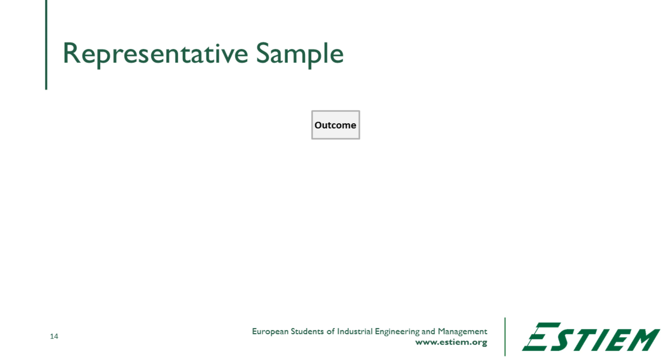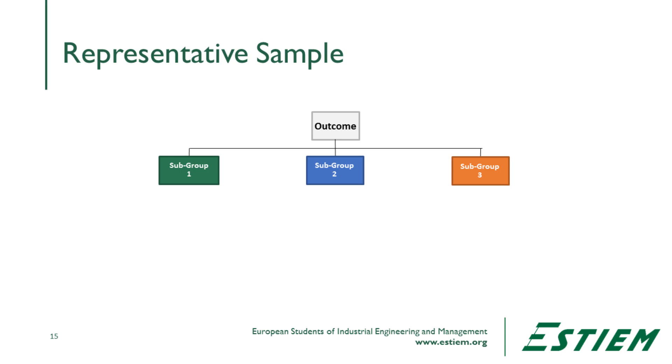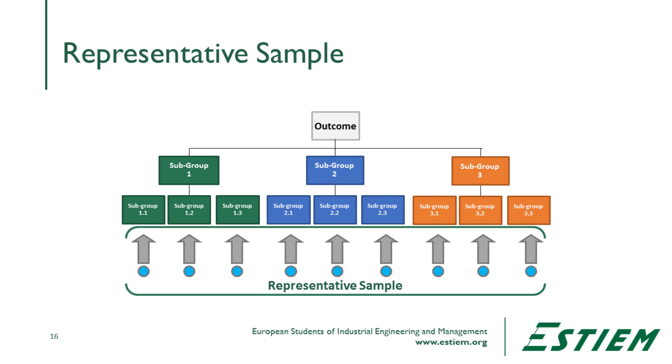The very first step in sampling is to make sure we have a rational subgroup — that happens when we have a representative sample. For example, if we're looking at problems from the sale of a mobile phone, there may be three rational subgroups: the handset itself, the accessories in the box, and the printed marketing material. We have to consider that problems could come from any of those subgroups and look within each to understand what's going on.